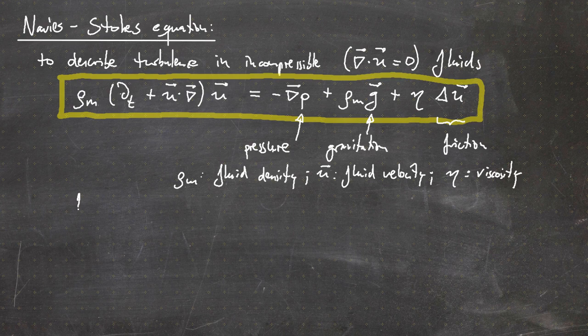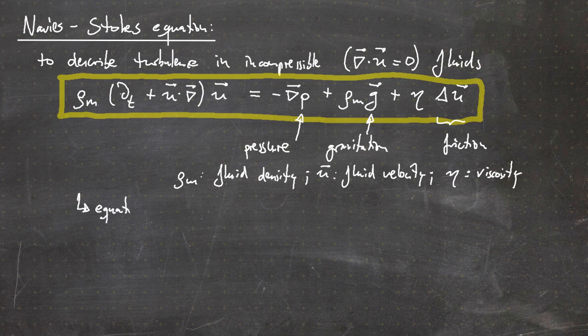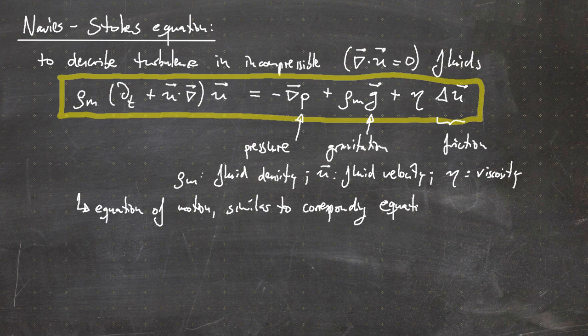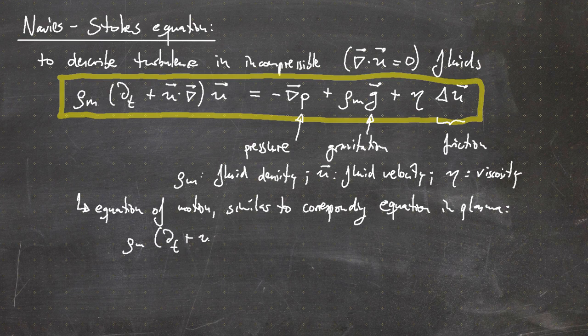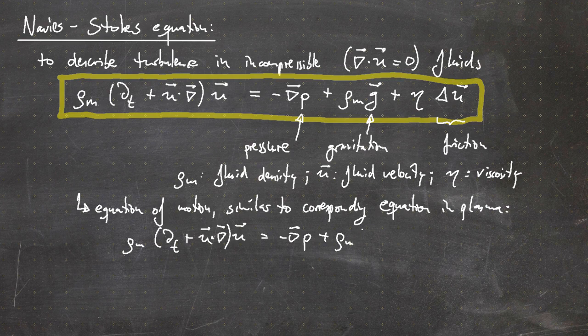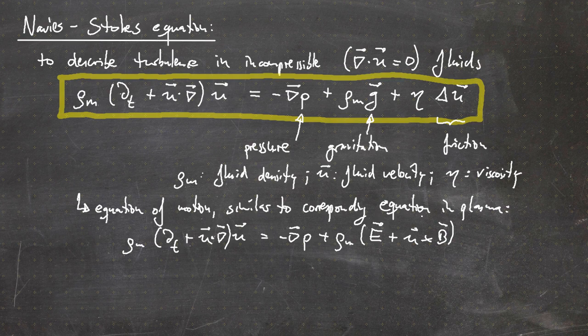The Navier-Stokes equation corresponds to an equation of motion, and it is similar to the corresponding equation in a plasma, which reads: ρₘ(∂/∂t + u·∇)u = -∇p + ρₘ(E + u×B), so the Lorentz term. This is quite similar.